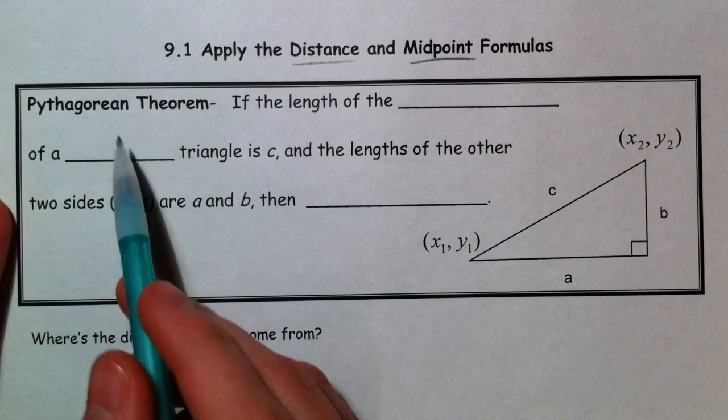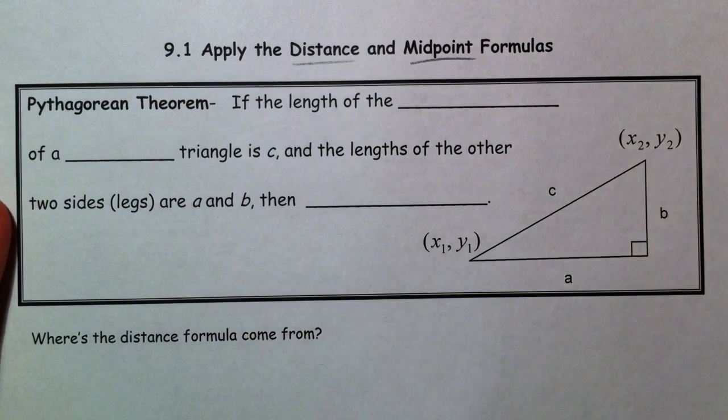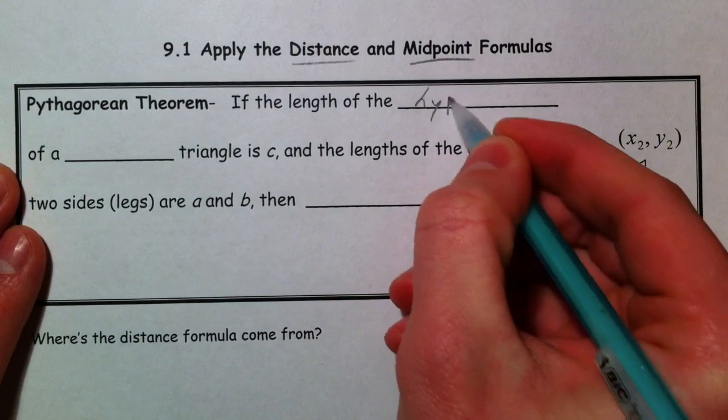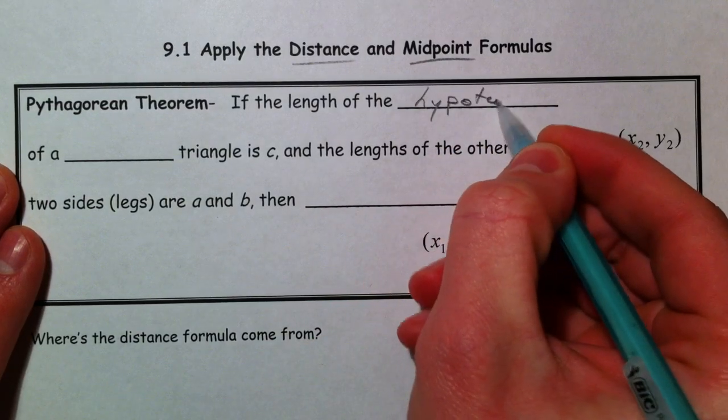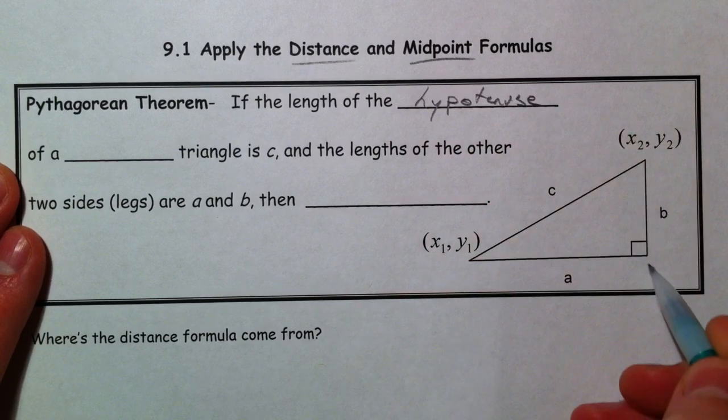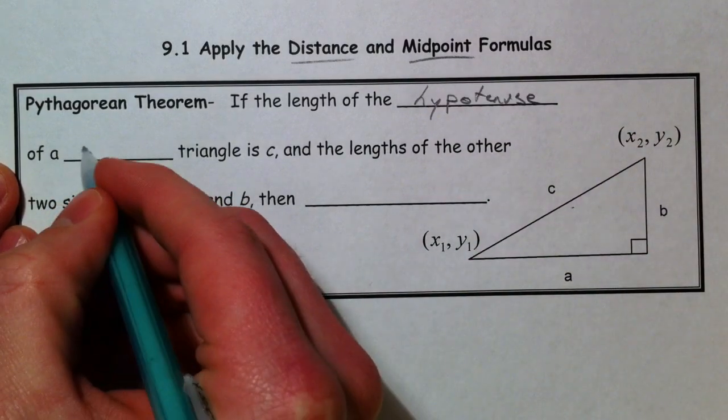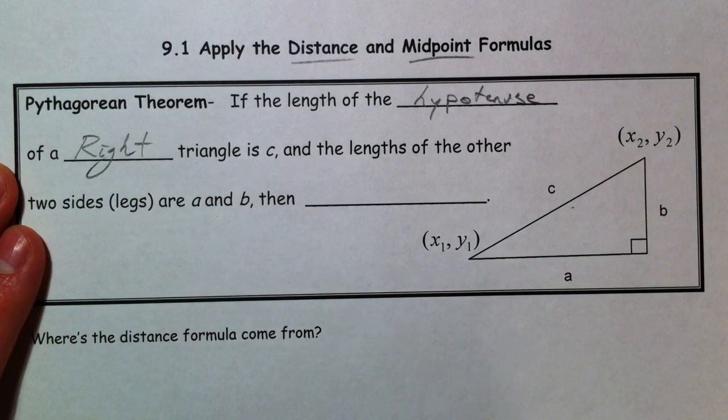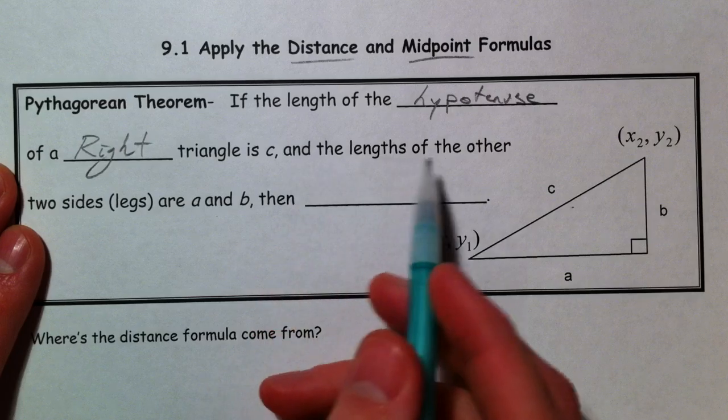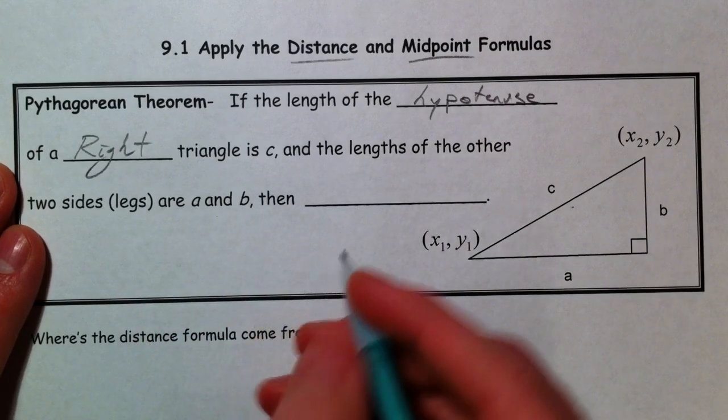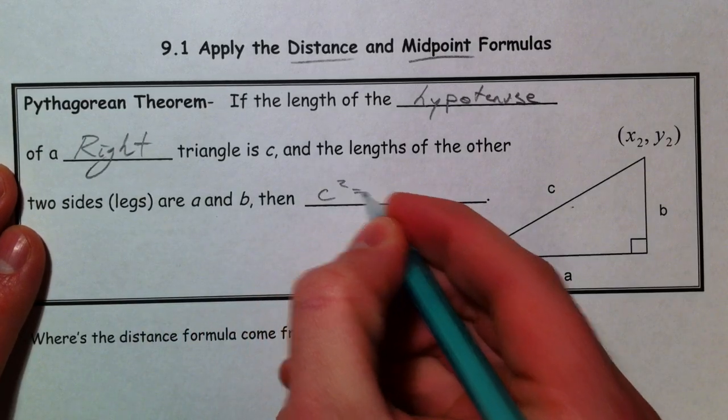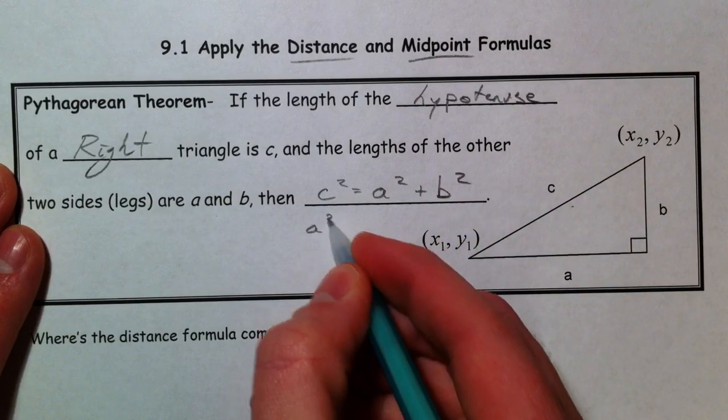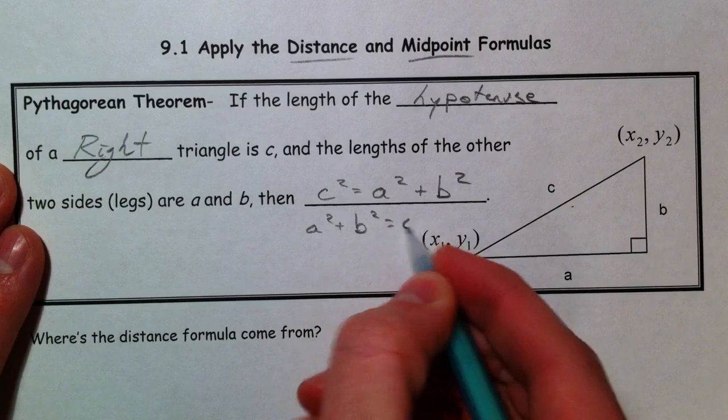Before talking about the distance formula, we're going to talk about Pythagorean Theorem because it's the exact same thing. So Pythagorean Theorem: if the length of the hypotenuse, which is that side across from the right angle, the hypotenuse of a right triangle—very important, otherwise this is not true—and the lengths of the other two sides are a and b, then c squared equals a squared plus b squared, or a squared plus b squared equals c squared, whichever way you want to write it.